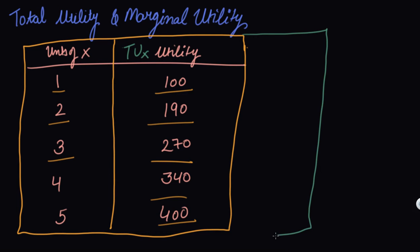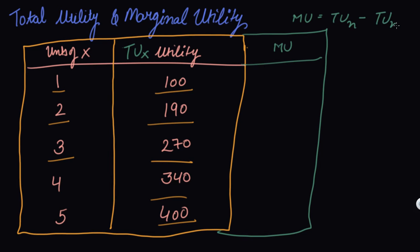Let's understand marginal utility now. What is marginal utility? The formula to calculate marginal utility is TU(n) minus TU(n−1) — that is, the total utility of the nth unit minus the total utility of the (n−1)th unit.